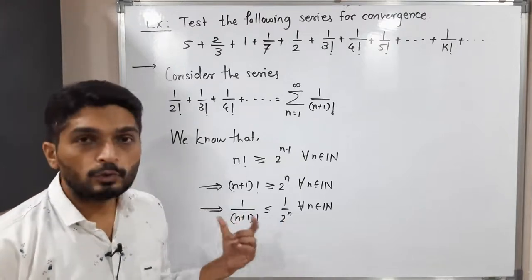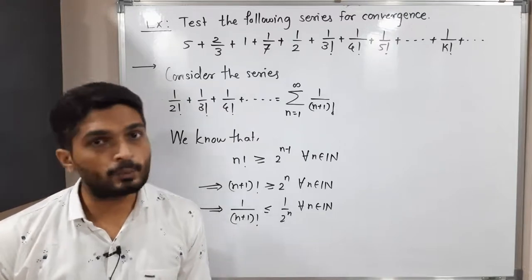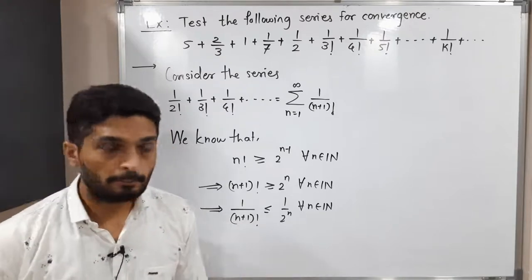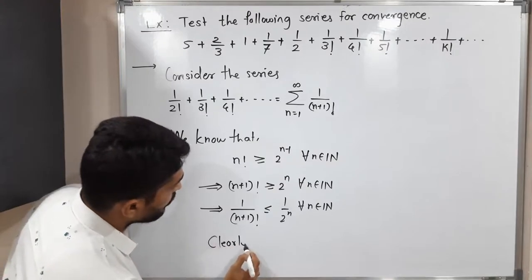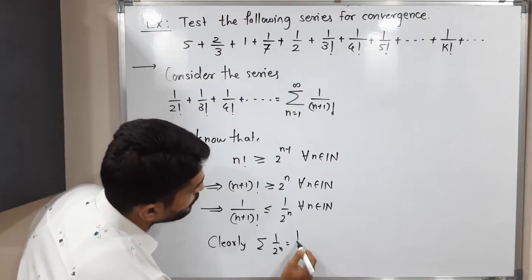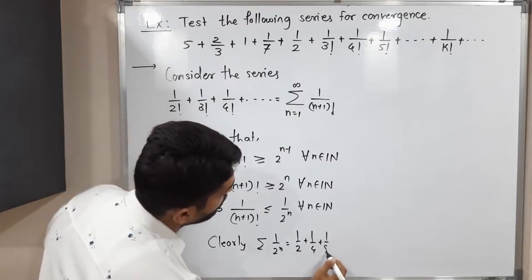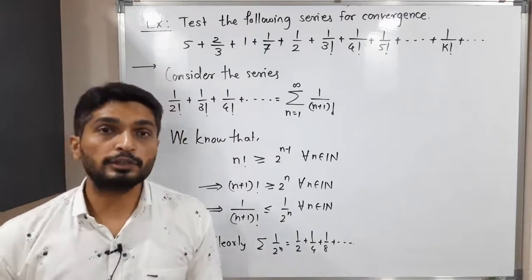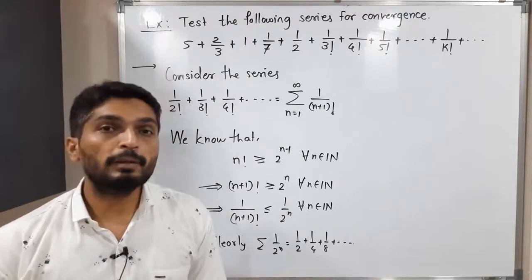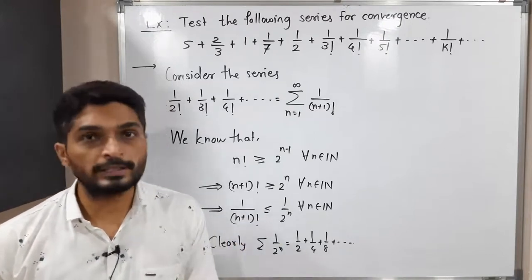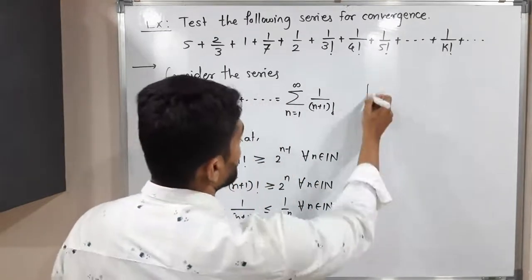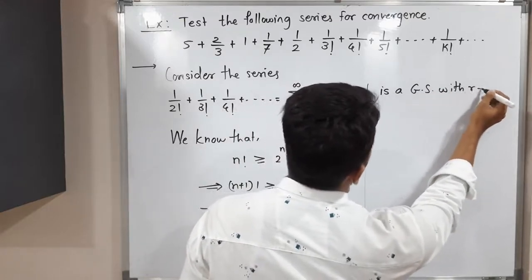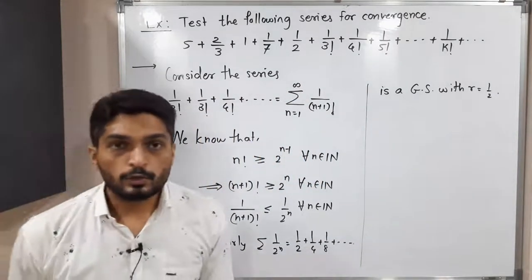In the comparison test, if the upper series is convergent the lower series is also convergent, and if the lower series is divergent the upper series is also divergent. Clearly, summation of 1 upon 2 raised to n — which expands as 1/2 plus 1/4 plus 1/8 and so on — is a geometric series with common ratio r = 1/2, since multiplying each term by 1/2 gives the next term.